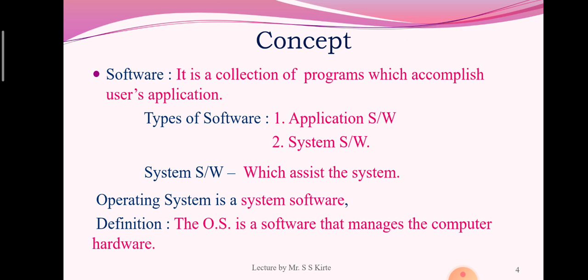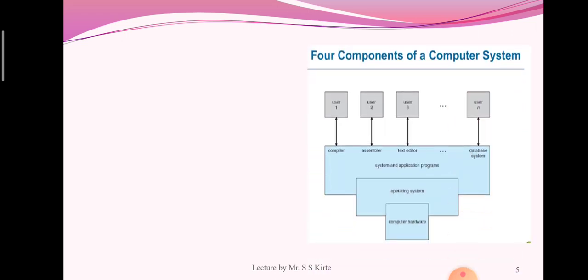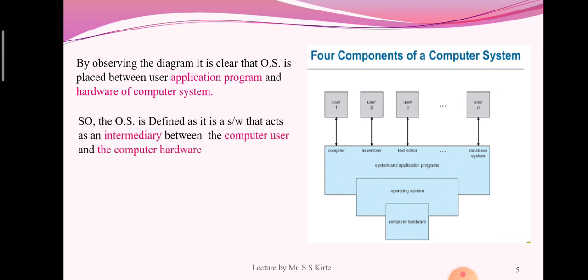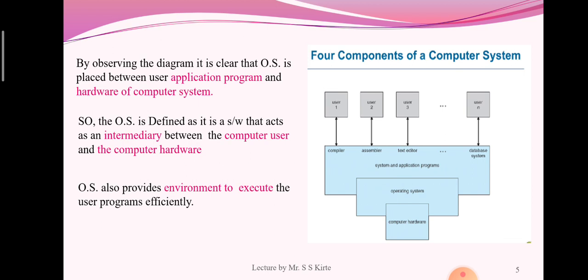The definition of the operating system: the operating system is a software that manages the computer hardware. Now see this diagram — this is a computer system components diagram. By observing this diagram, it is clear that the operating system is placed between the user application program and the hardware of the computer system. So the OS is defined as a software that acts as an intermediate between the computer user and the computer hardware. The operating system provides an environment to execute the user programs efficiently.